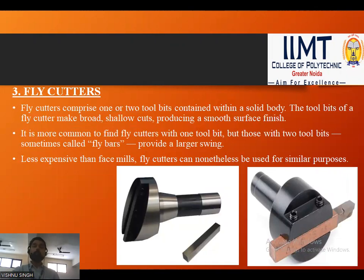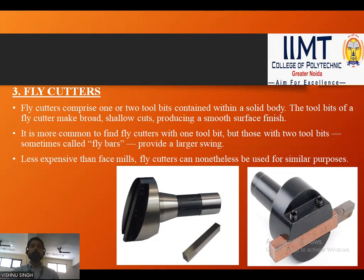Next is the fly cutter. The fly cutter comprises one or two tool bits contained within a solid body. The tool bits make broad, shallow cuts, producing a smooth surface finish. Fly cutters with one tool bit are most common, but those with two tool bits are sometimes known as fly bars and provide a larger swing. Fly cutters are generally less expensive than face mills but can be used for similar purposes.